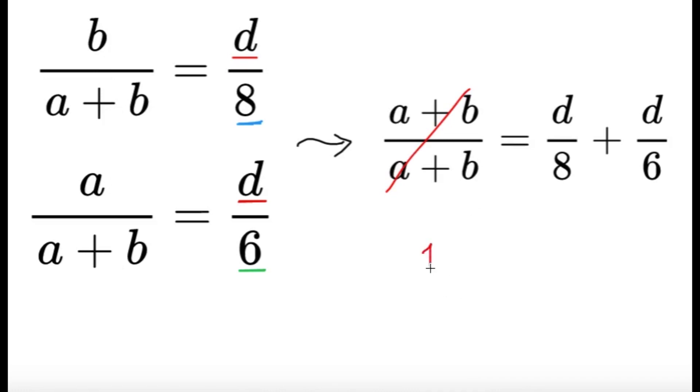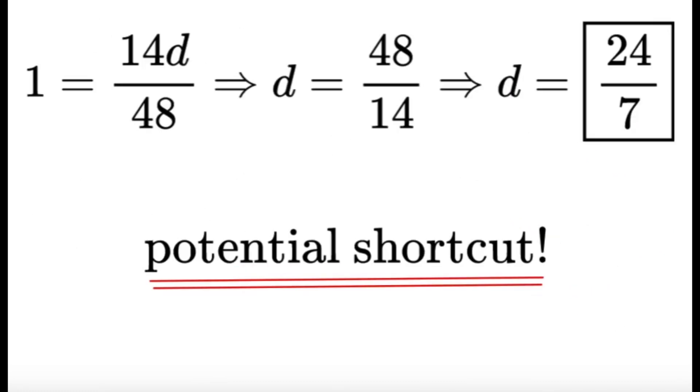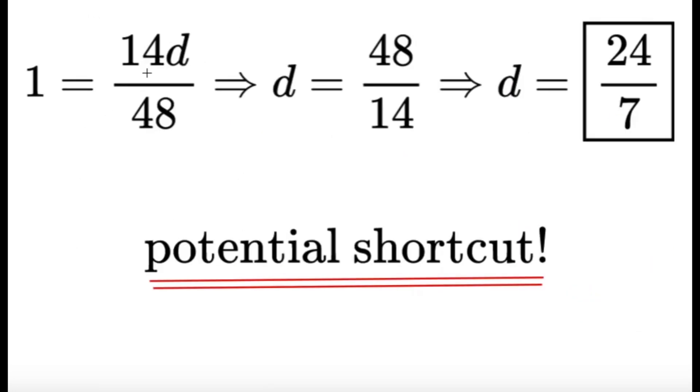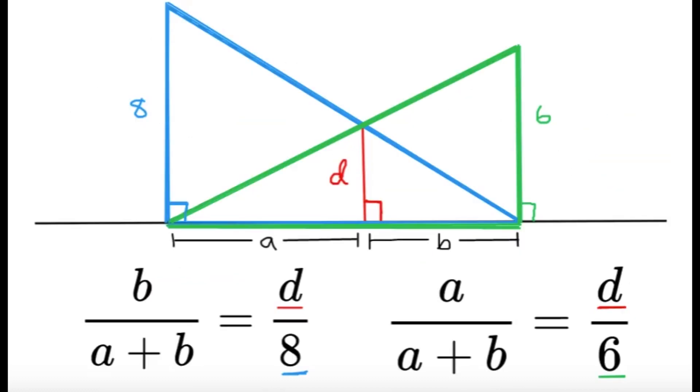So the left-hand side would become 1, and then the right-hand side, it's just d over 8 plus d over 6. Let's just do the cross method for fractions, so it's going to be 6d plus 8d divided by the product of 8 and 6, so that's going to be over 48. We can simply solve for d. So 1 equals 14d over 48, so d is equal to 48 over 14. Simplifying d, we can get 24 over 7, and this is indeed our final answer, and this is the length of the red segment in the given figure.